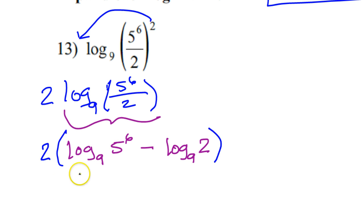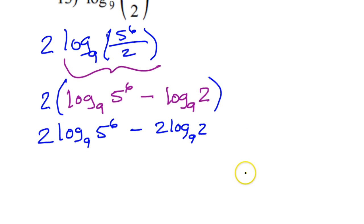So that 2 is going to wind up distributing into the inside of this thing. So that's going to give me 2 log base 9 of 5 to the 6th power minus 2 log base 9 of 2. So that's what I have so far.